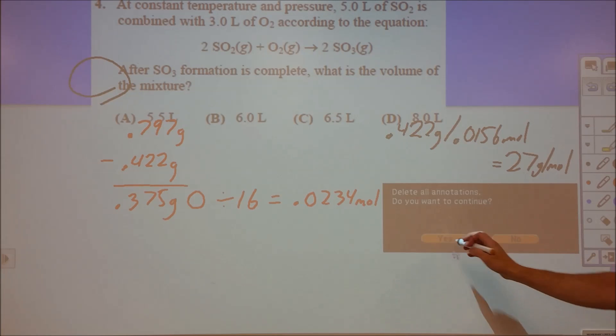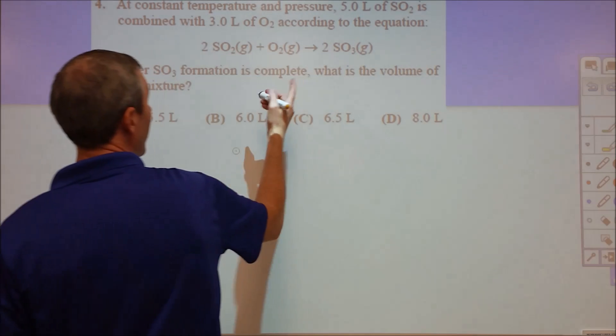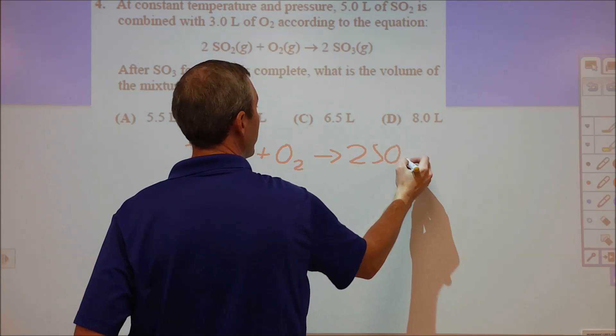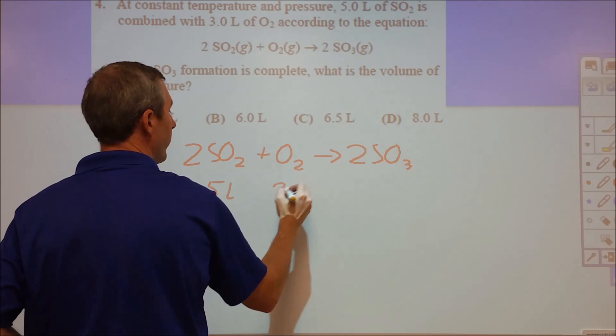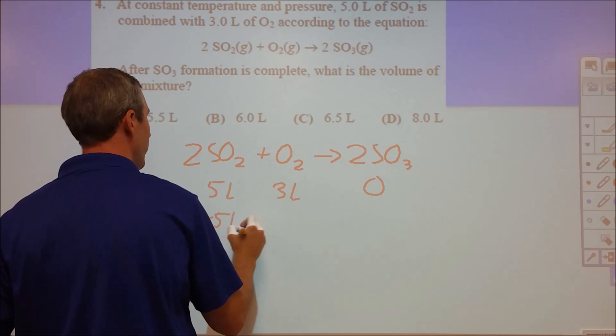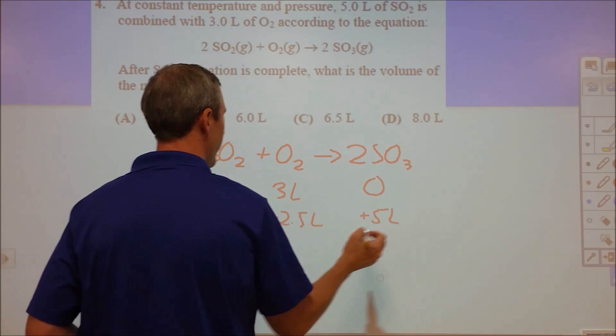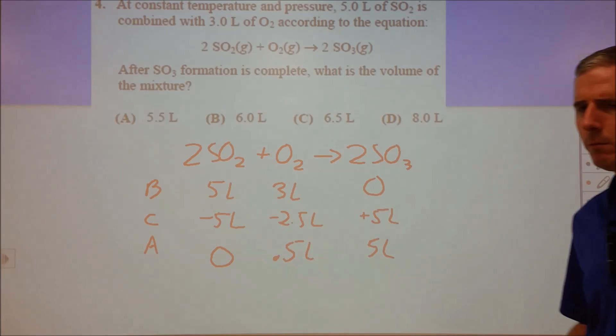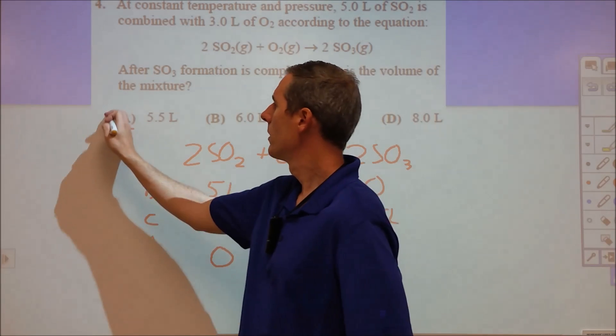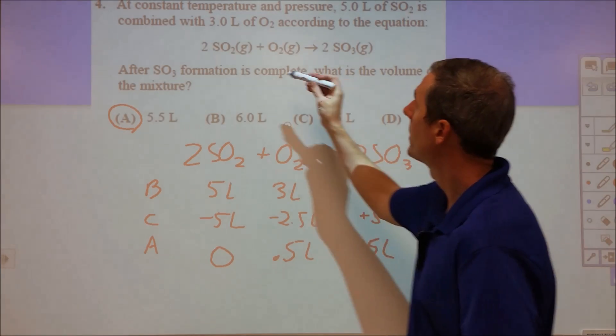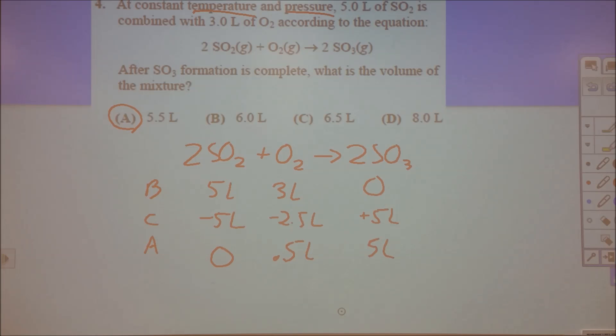Number four, also pretty simple. You could probably work this out without writing anything down. I'll do a VCA chart to make sure everyone has it. We're looking at five liters of this and three liters of this, zero of product to start. We drop by five liters here, by 2.5 liters here, and go up by five liters of product. After: zero, 0.5 in excess, and five of product. Total is 5.5 liters. Answer is A. Key thing: liters are proportional to stoichiometry like moles when temperature and pressure are constant.